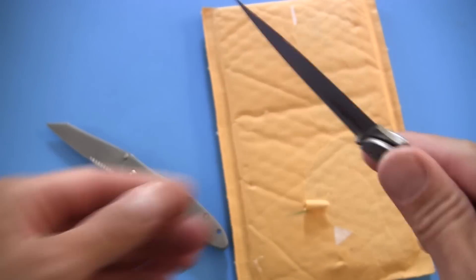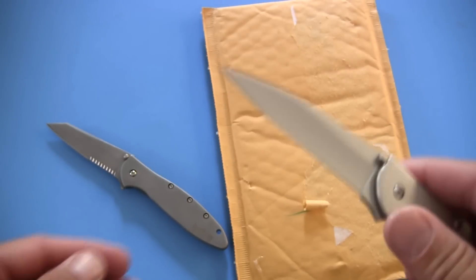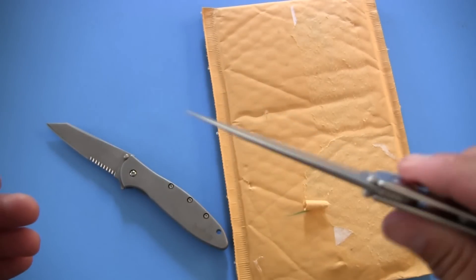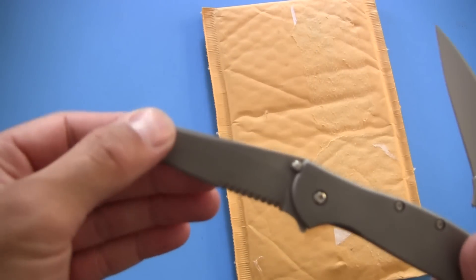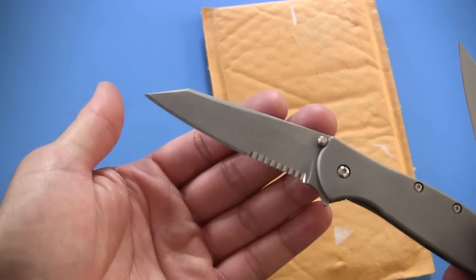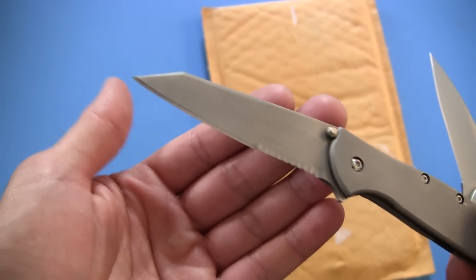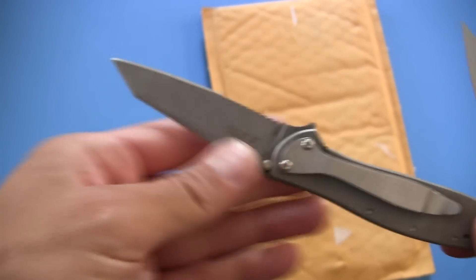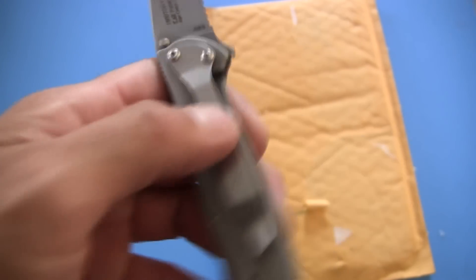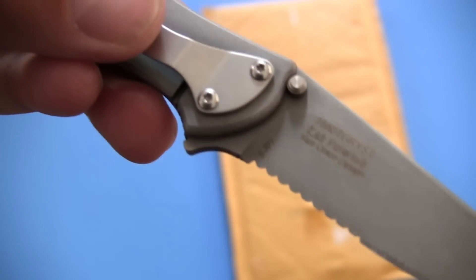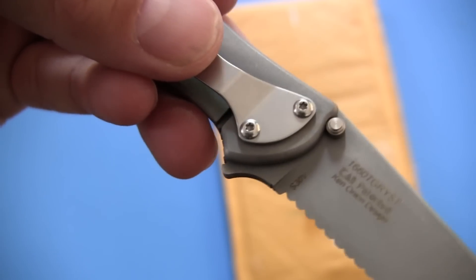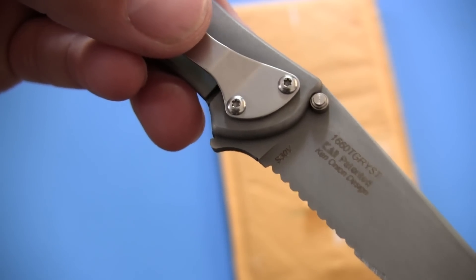This one's always kind of got that sort of toothpick, really piercey, real thin slicey pointy tip to it. The Random Leak is a little bit more reinforced. This of course borrows the blade from the Random Task, both of these knives being designed by Ken Onion. At the base of the blade you can see S30V.